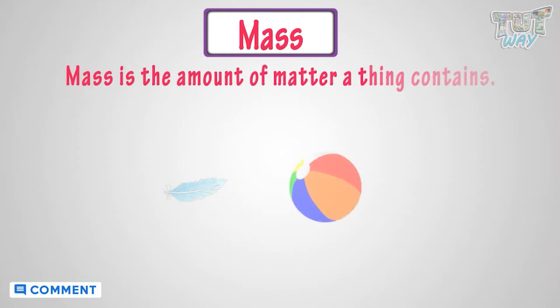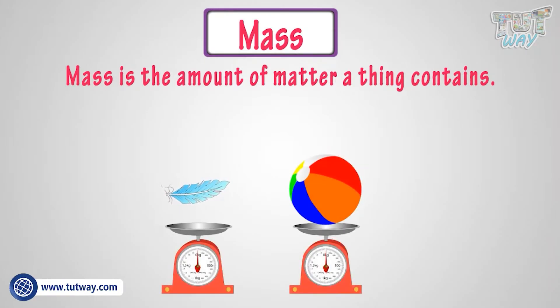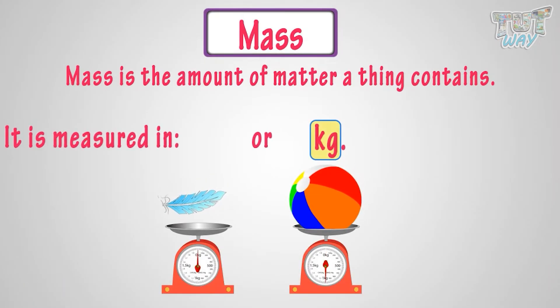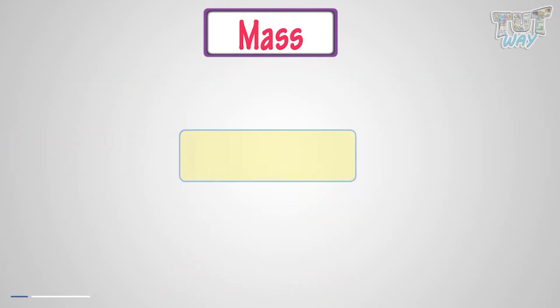The mass is the amount of matter that a thing contains. The units of measuring mass are kilograms and grams, where one kilogram is one thousand grams.